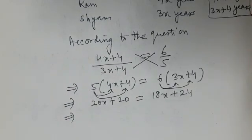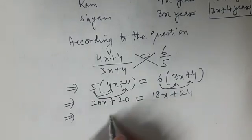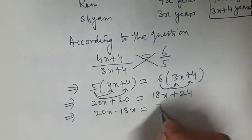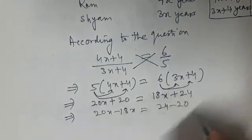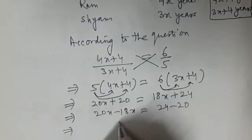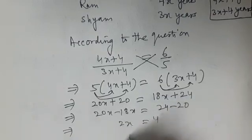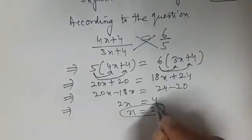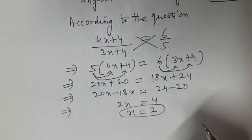Now bring the variable to one side, so 20x minus 18x is equal to 24 minus 20. This implies 2x is equal to 4, so after simplification x comes out to be 2. The value of x is 2.